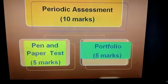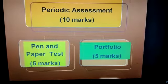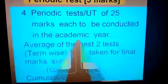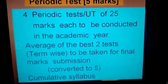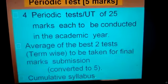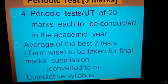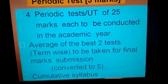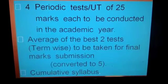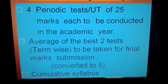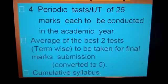Periodic assessment carries 10 marks and includes a pen and paper test worth 5 marks and a portfolio worth 5 marks. Four periodic tests (UTs) of 25 marks each are to be conducted in the academic year. The average of the best 2 tests term-wise is calculated — tests 1 and 2 averaged for the first term, and tests 3 and 4 for the second term. Final marks are then converted to 5 marks with a cumulative syllabus.